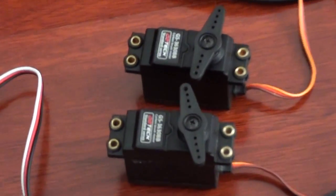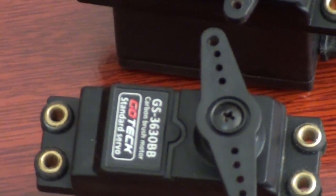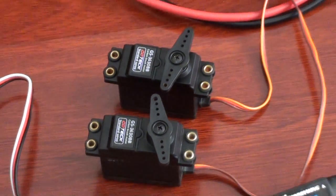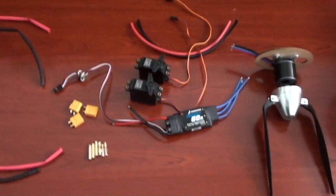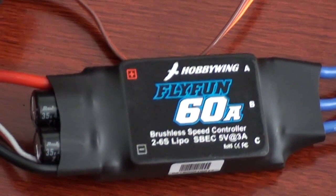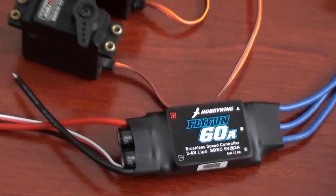I'm going with the Gotek servos. These are ball bearing servos, very nice servos. I've used them before. And I decided to go with Hobbywing Flyfun 60 ESC so I can use 4S or 6S LiPo.